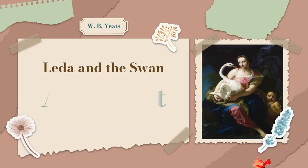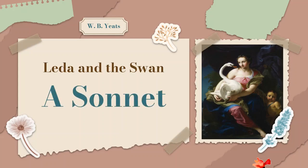'Leda and the Swan' is a short-form poem written in the form of a sonnet, but the structure is not entirely conventional. A sonnet is made of 14 lines, sometimes divided into three quatrains and a couplet in the English form, or an octave and a sestet in the Petrarchan or Italian form. Though this poem seems to be a Petrarchan sonnet, we see a break in its structure. In the 20th century, changes were made to the sonnet form, and the patterns sonnets follow changed accordingly.